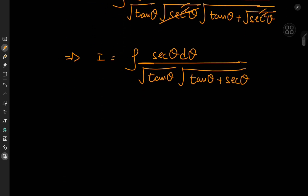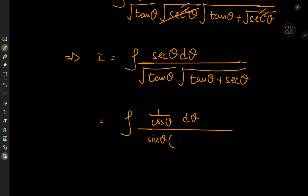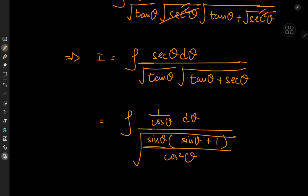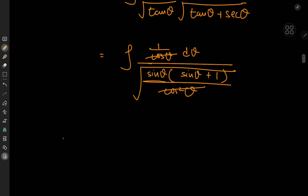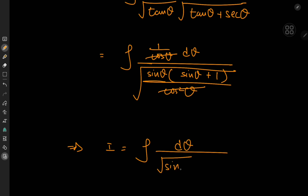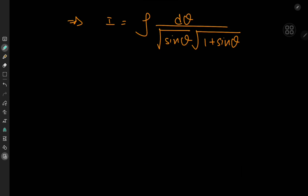Now let's expand the secants and tangents in terms of sines and cosines. We have the integral of 1 over cosine theta d theta, divided by root sine theta times what we have in the tangent plus secant term. Tangent is sine over cosine, and secant is 1 over cosine, so we have sine theta plus 1, all over cosine squared theta, inside the square root. After cancellation, the integral I simplifies to the integral of d theta divided by root sine theta times root 1 plus sine theta. We can now expand the sine functions using the double angle formula.